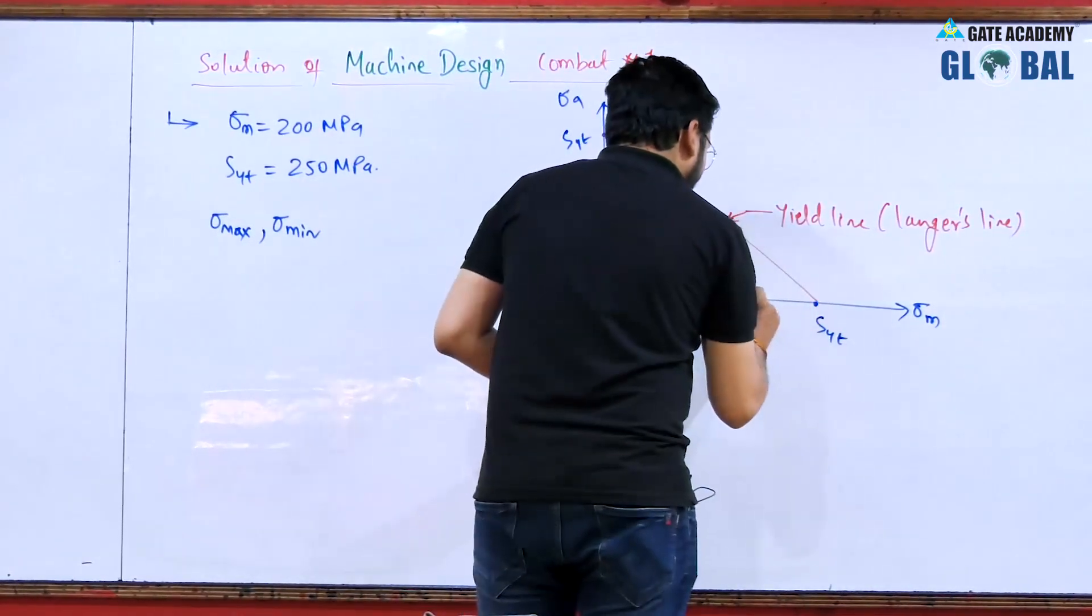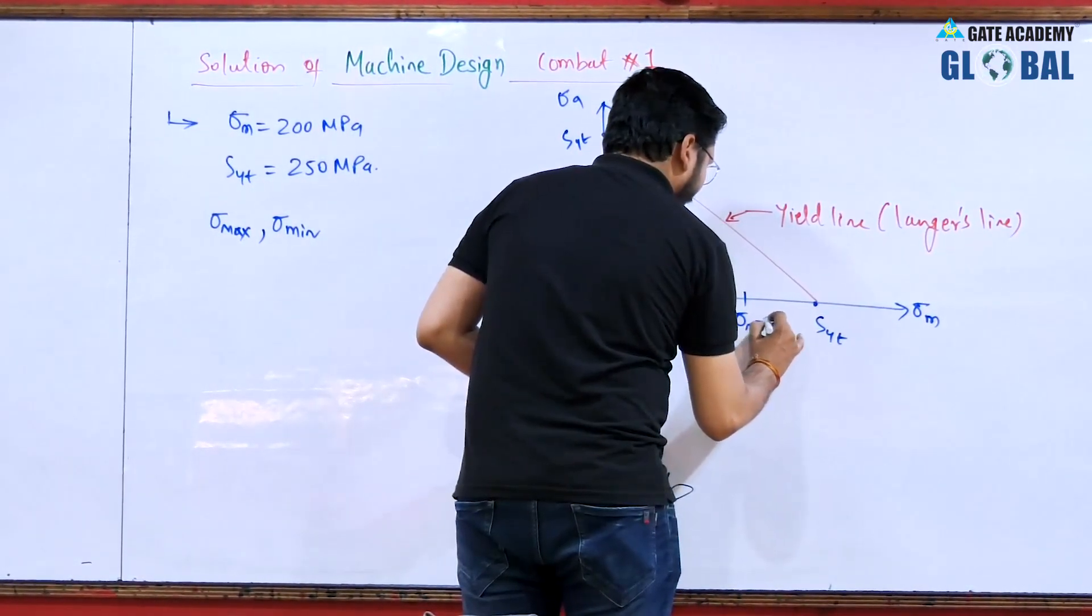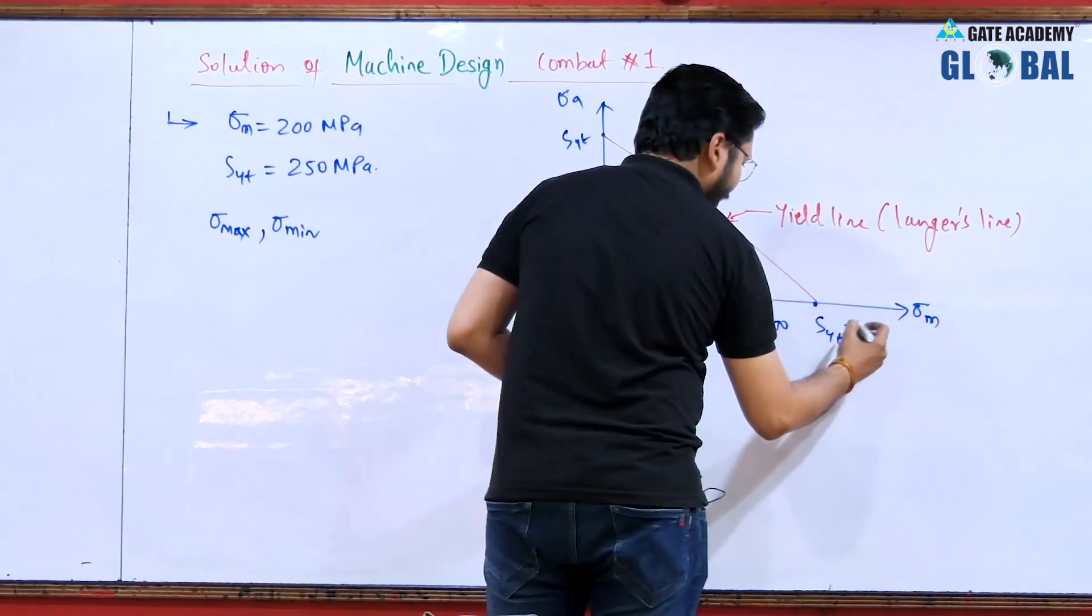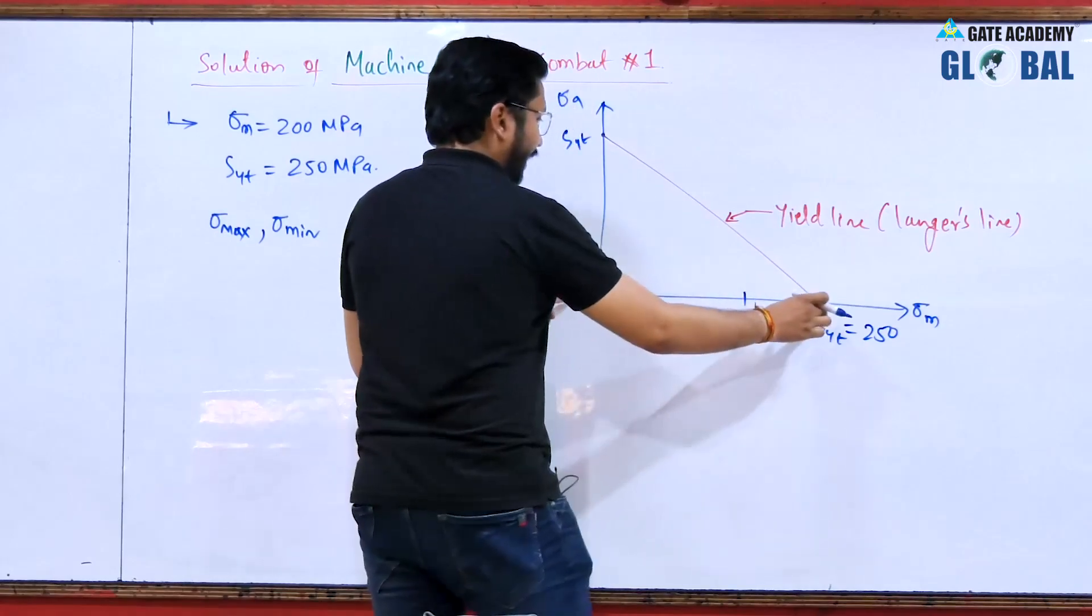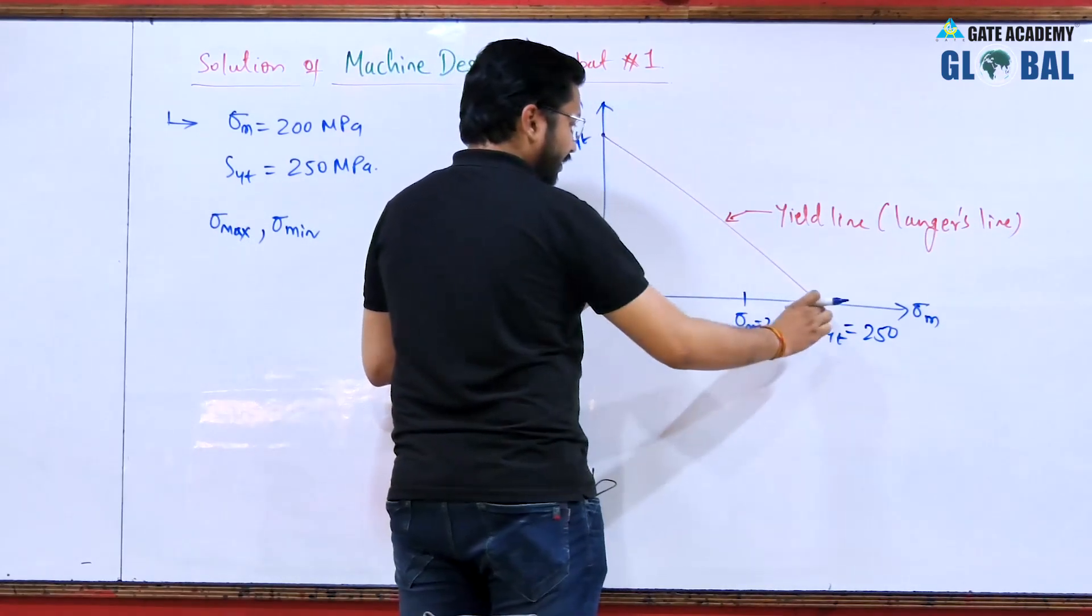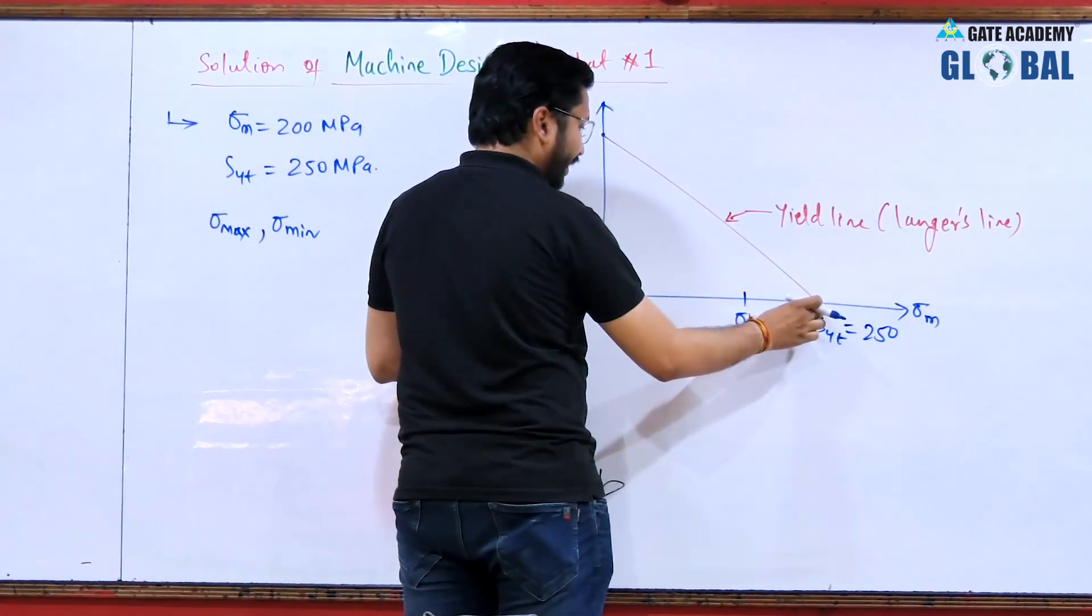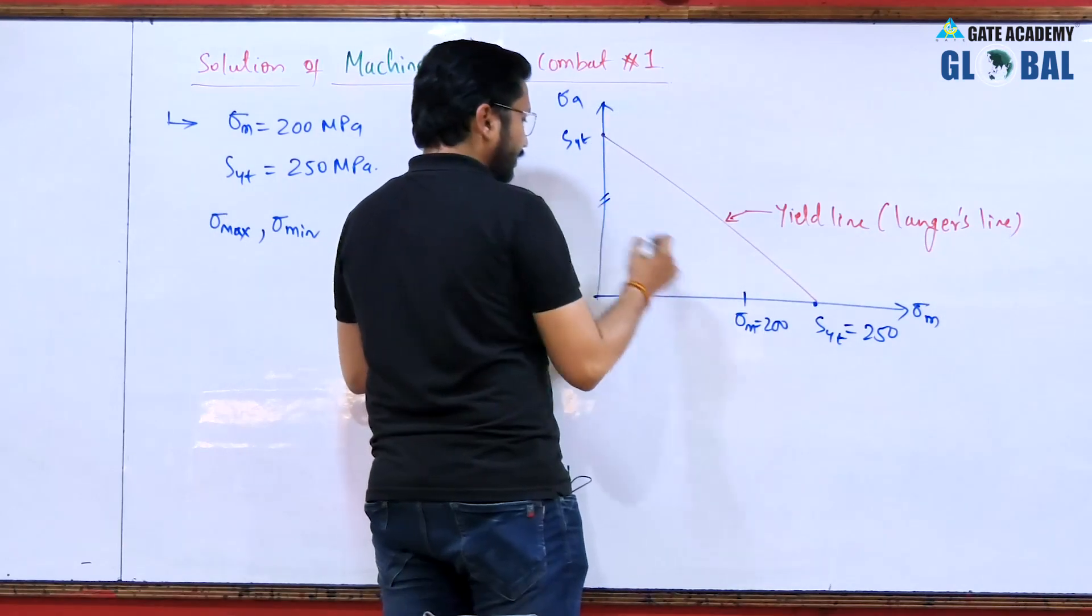Here sigma m is 200 mega Pascal and Syt is 250 mega Pascal. You can see that the base is forming a right angle triangle such that the base of the triangle and perpendicular are equal in length.